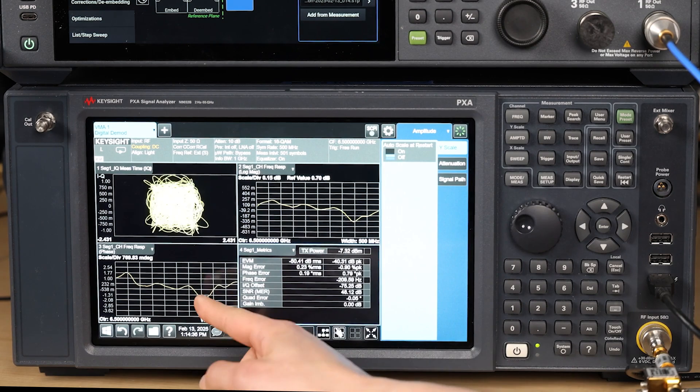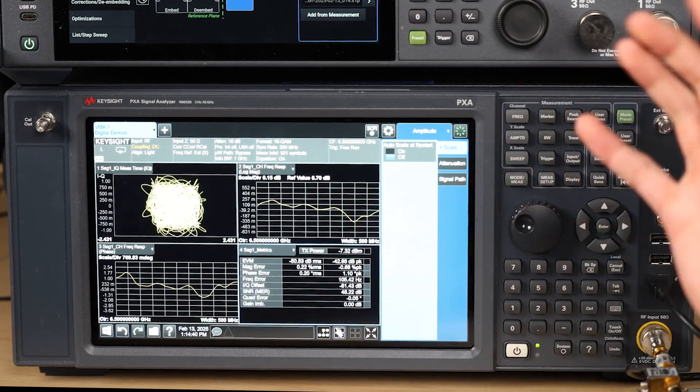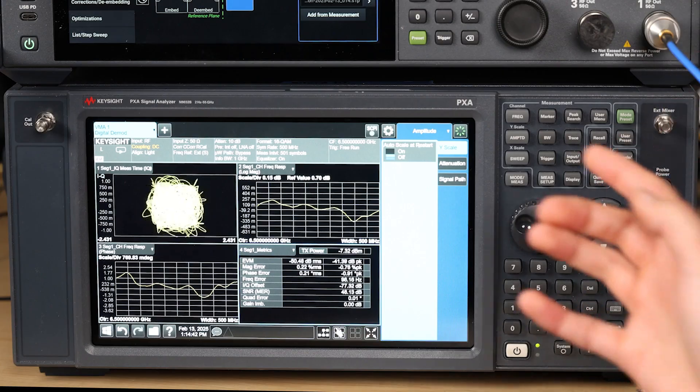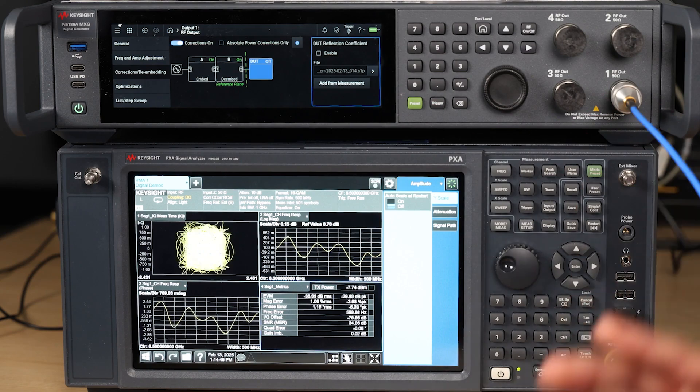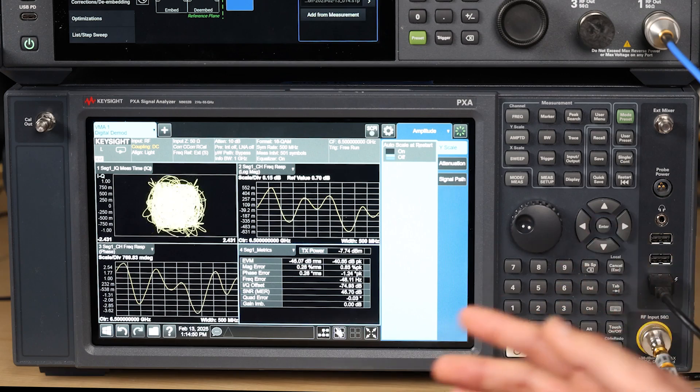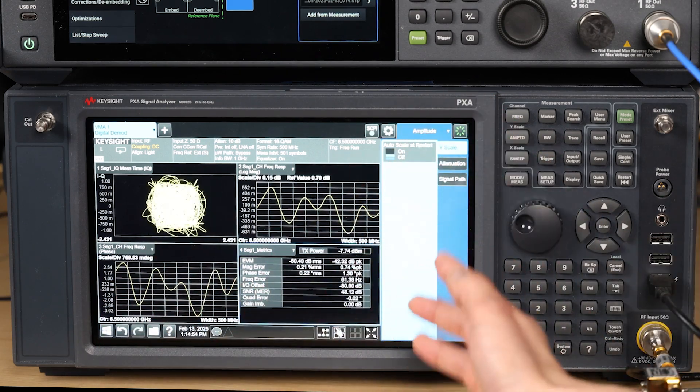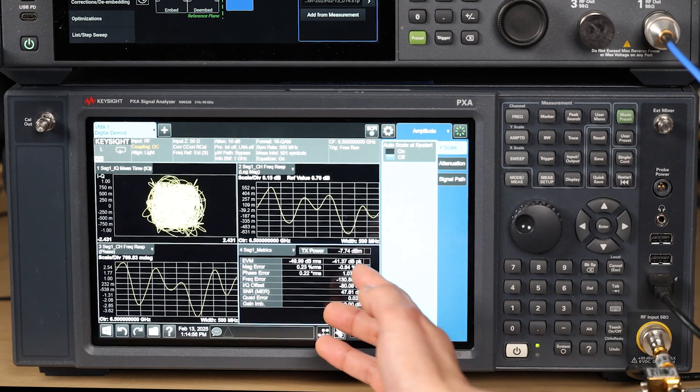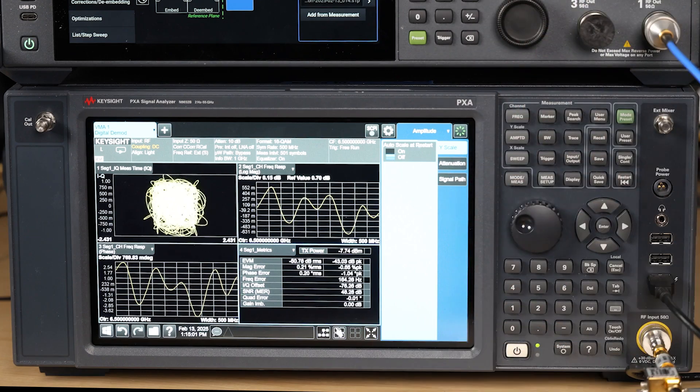This is what my phase response looks like, and this is what my magnitude response looks like when I have the DUT match characterization employed. When I turn it off, we can see that I'm not compensating for the mismatch errors, meaning that I'm reintroducing the reflected and re-reflected waves or signals into my measurement. And it creates this large ripple effect and a less flat frequency response.